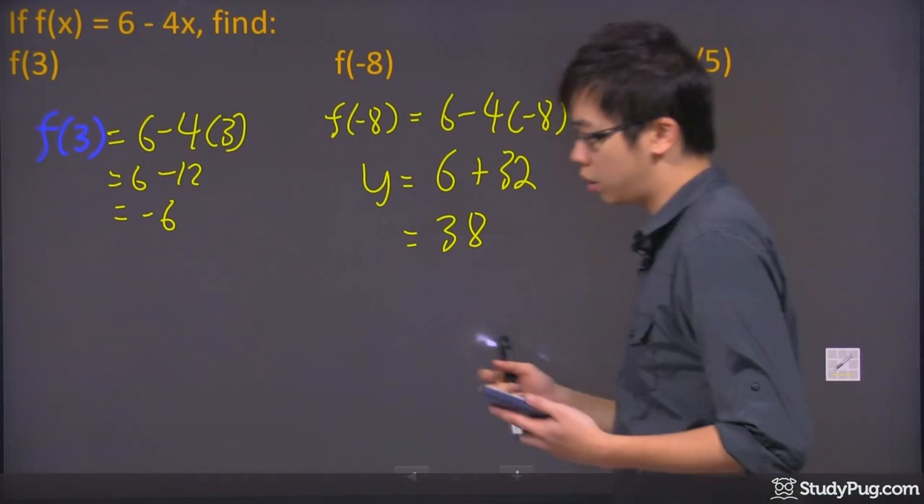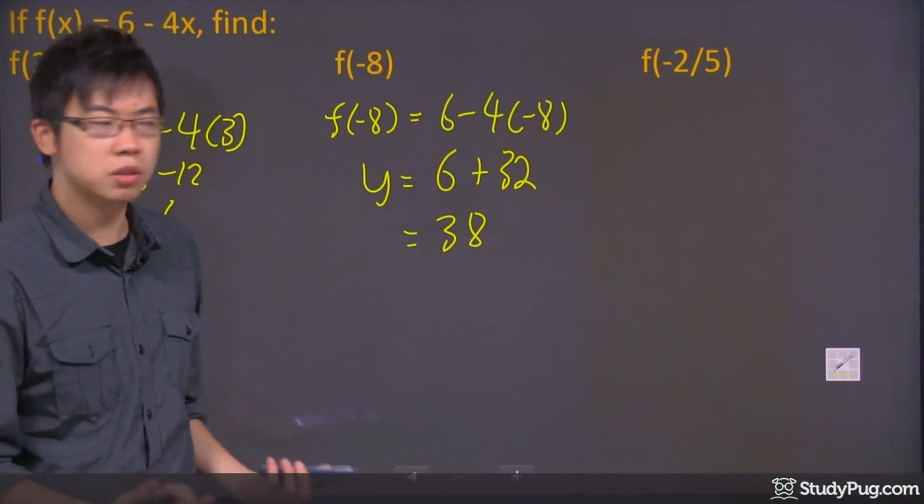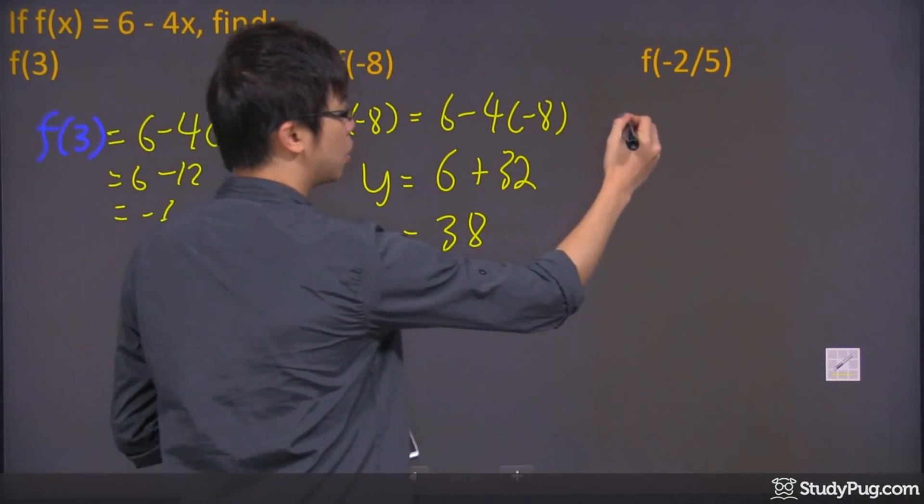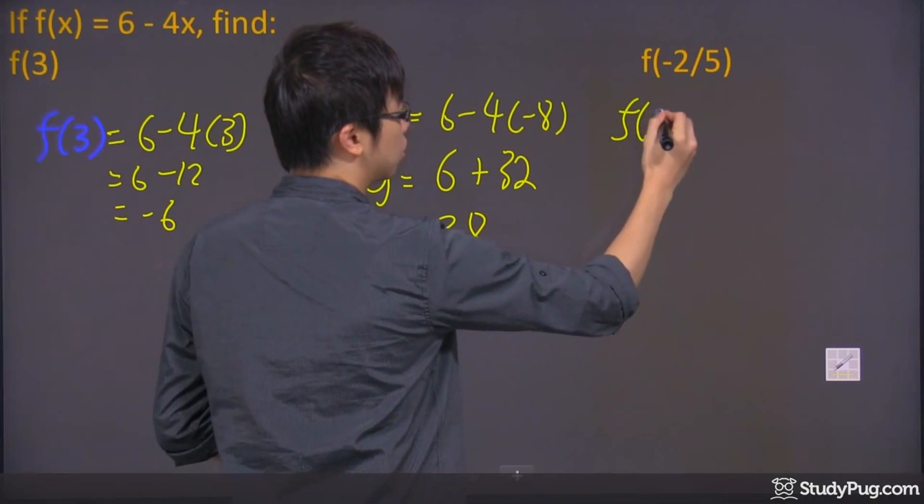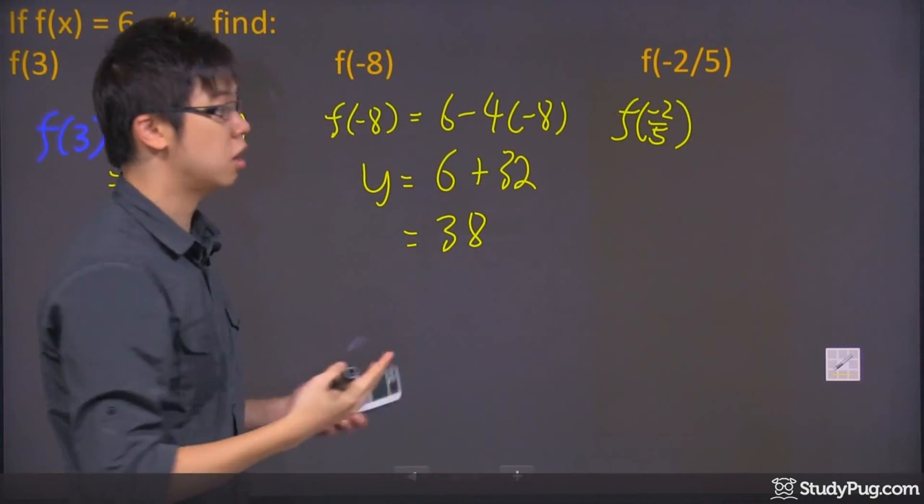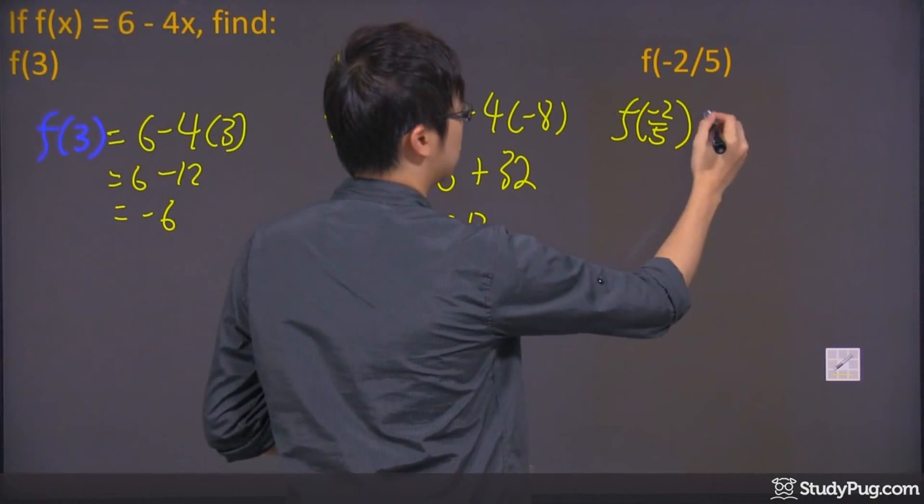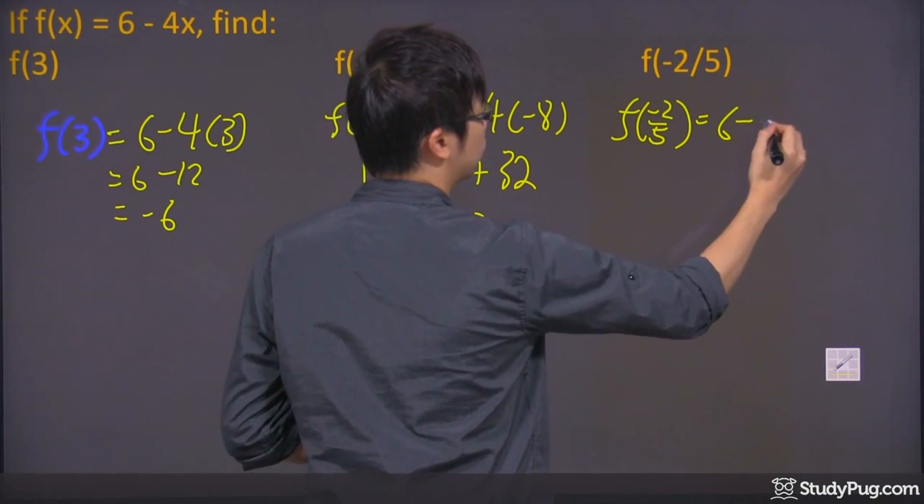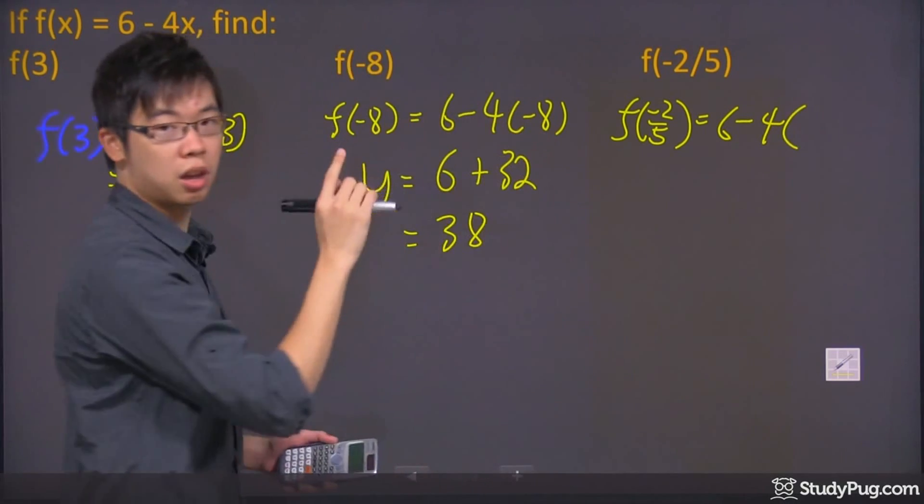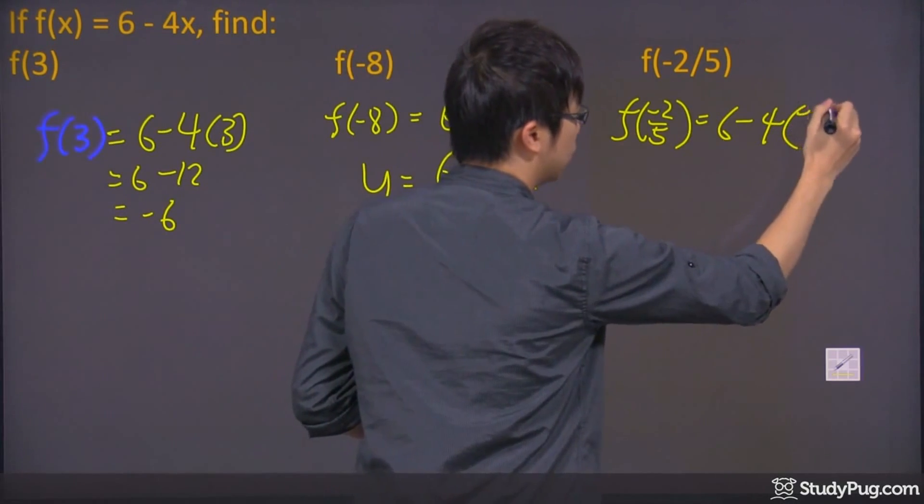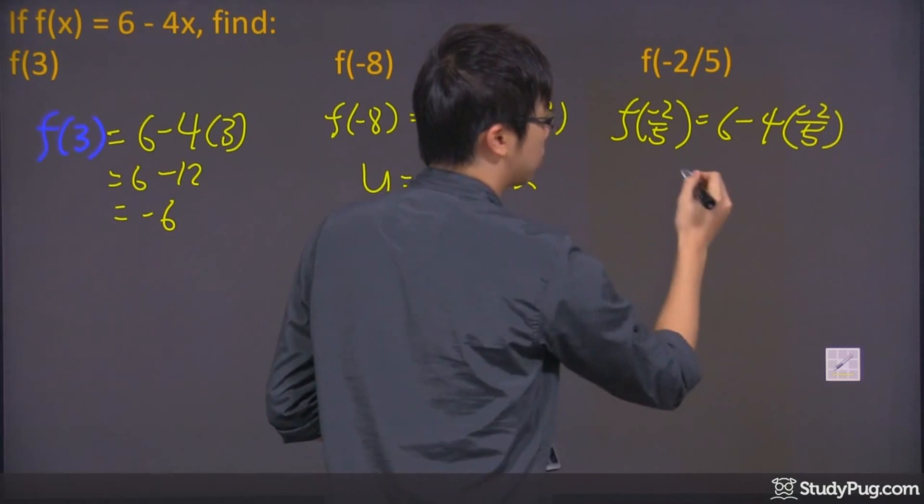Let's try the very last one over here. So it's a fraction. Does it matter if it's a fraction? No, it doesn't. Because you're still going to plug it in. So I'm going to write down everything here. So it's negative 2 over 5. And it's still equals to 6 minus 4. And the bracket, we're going to substitute the negative 2 over 5 into the bracket.